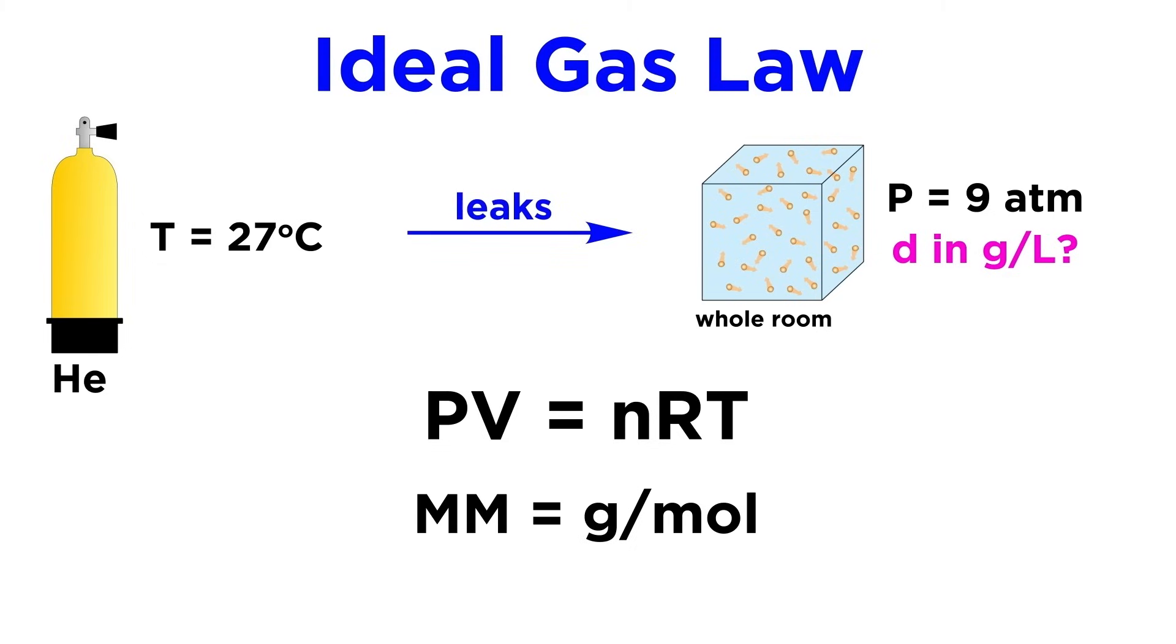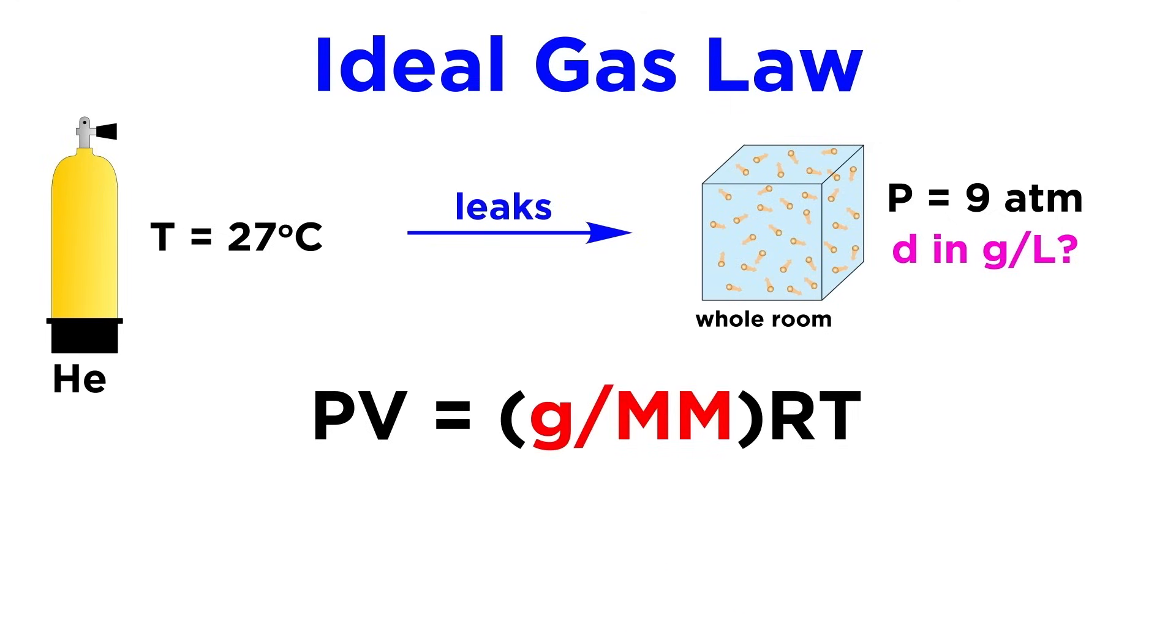If we rearrange, this means that the number of moles of gas is equal to the mass of the gas divided by its molar mass. So in the ideal gas law, instead of n, we could just as well put mass over molar mass.